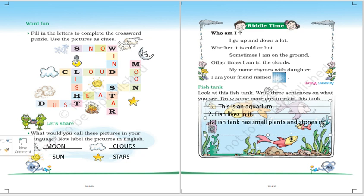Let's come to the next exercise, Let's Sing. Rain on the green grass, rain on the trees and rain on the housetop but not upon me. These are the rhyming words: way, away, day, play. What you have to do is fill these colors: red, yellow and blue. Then you will get something here. I will not tell you what, you will get after coloring it.